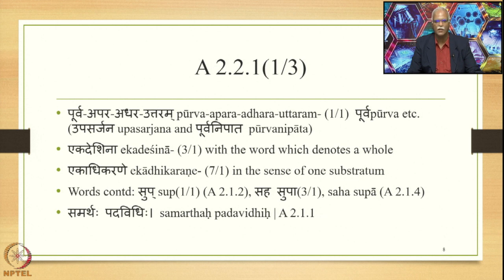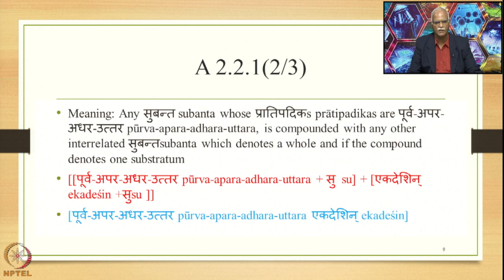The second Pada in the Sutra is Ekadeshina, which is instrumental singular meaning 'with the word which denotes a whole.' The third Pada is Ekadhikarane (7.1), meaning 'in the sense of one substratum,' so the compound denotes one substratum. The meaning of the Sutra is: any Subanta whose Pratipadikas are Purva, Apara, Adhara, and Uttara is compounded with any other interrelated Subanta which denotes a whole, if the compound denotes one substratum.